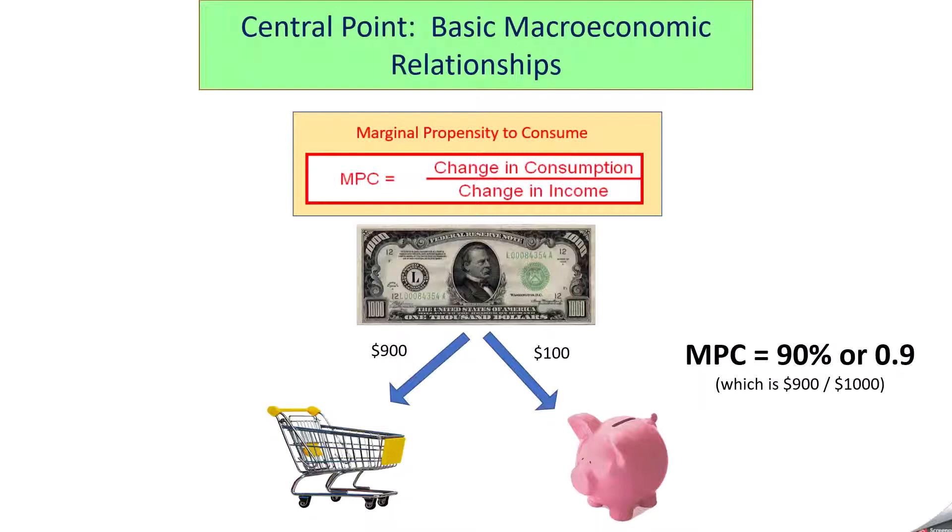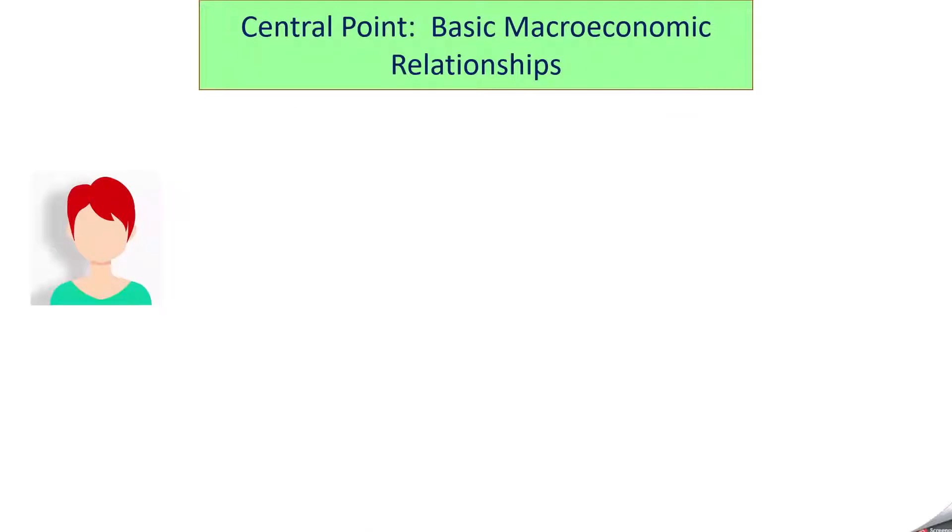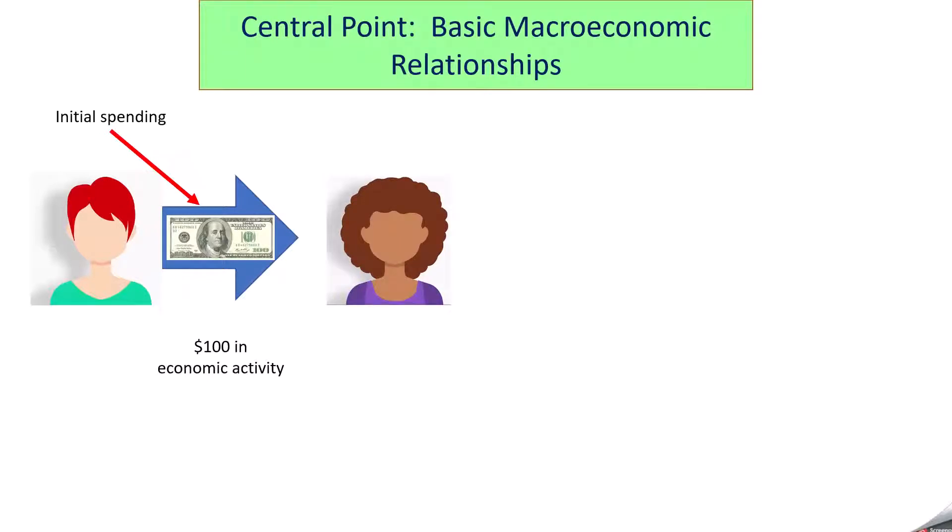Where this concept gets really important is how it connects to the multiplier effect. So let's start a whole different scenario. Imagine this girl increases her spending. She decides to spend $100. Where does that come from? I don't know. Maybe I handed it to her on the way out of class one day in an experiment. Most people would then think, okay, this economy just became $100 bigger because she spent $100. But that's far from what's actually happening because that money that she spent winds up becoming somebody else's income.